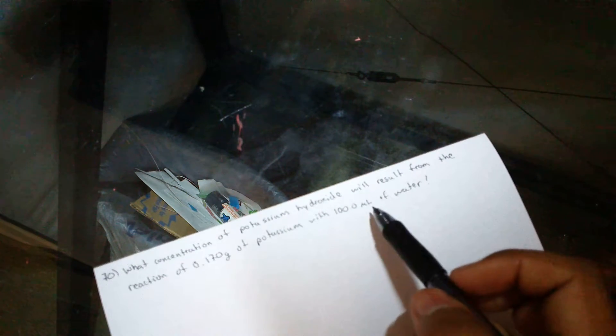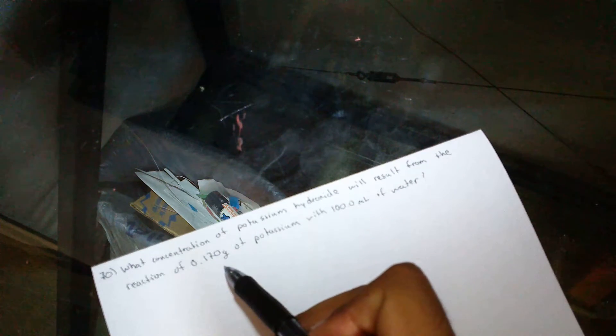Hello guys. I'm going to do problem number 70. It says, what concentration of potassium hydroxide will result from the reaction of 0.170 grams of potassium with 100 milliliters of water?